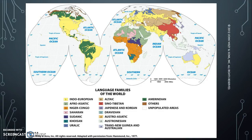We've got Uralic and Altaic — not so much in Asia as in Russia, which means it's partially in Asia but also partially in Europe. Sino-Tibetan, Japanese and Korean are related; Dravidian — you get the idea. You can look across this map and see where we find speakers of different types of languages.